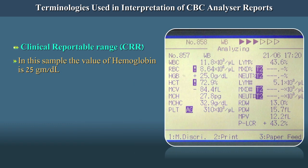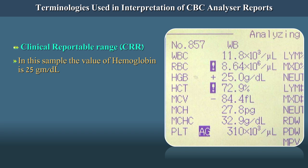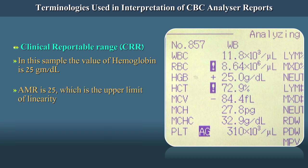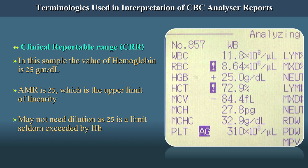In this sample, the value of hemoglobin is 25 grams per deciliter. The AMR is 25, which is the upper limit of linearity, but you may not need dilution as 25 is a limit seldom exceeded by hemoglobin.